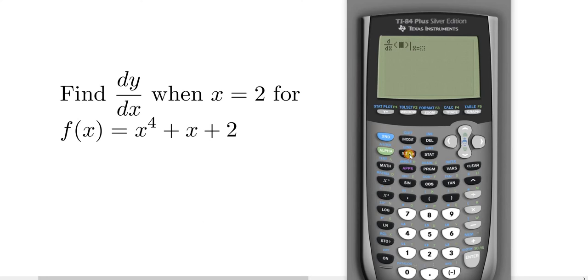Press x, then the exponent key. This takes us up here. Press 4, then press the arrow key to come down, and then plus, x, plus, and 2.